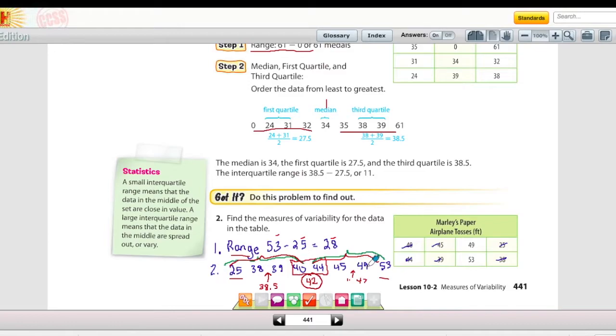If you need to rewatch this section on how to find the measures of variability, please do so. Start by finding the range, line up the data values, and then split them up and then find the medians for those first and third quartiles.